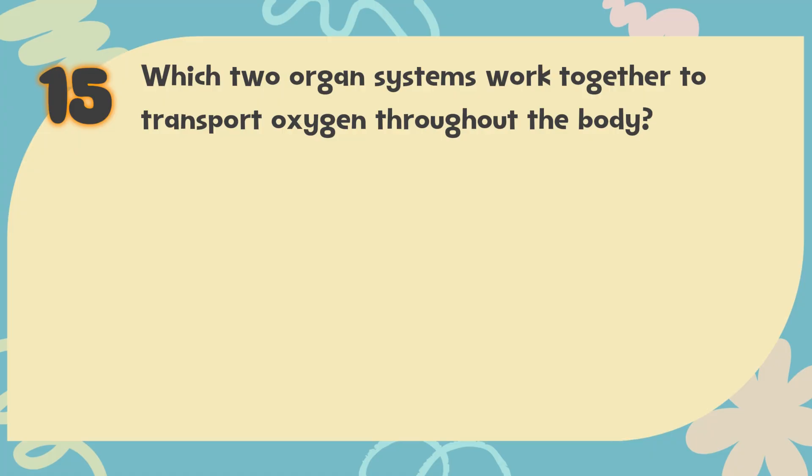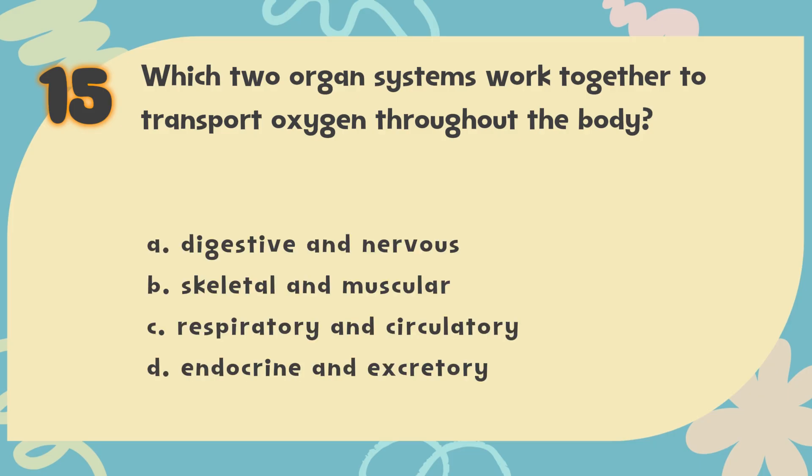Number 15. Which two organ systems work together to transport oxygen throughout the body? The choices are: A. Digestive and nervous. B. Skeletal and muscular. C. Respiratory and circulatory. D. Endocrine and excretory.